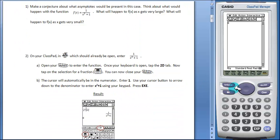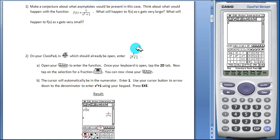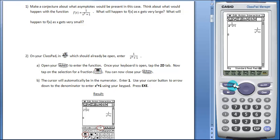Students will open their keyboard to enter this function: 1 divided by x squared plus 1. In the 2D tab students will find the fraction button that will allow them to enter 1 divided by x squared plus 1. Tap EXE. You can now close your keyboard.